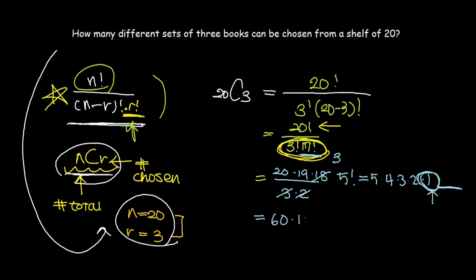So 60 times 19 equals 1140. So our total answer is 1140.